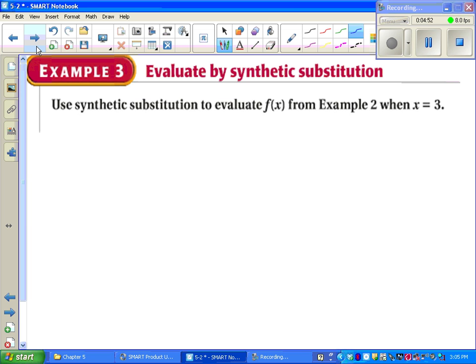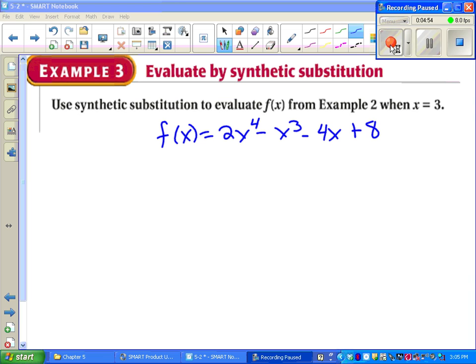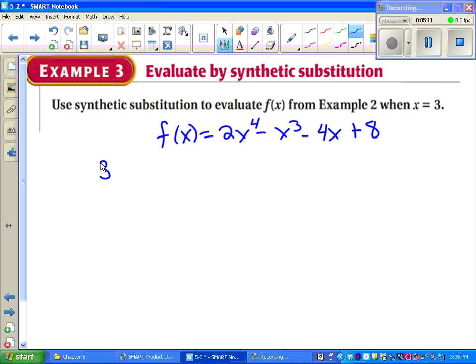So let's take a look at what synthetic substitution means. First, we look at the original problem from example two. Next, we have to check to see if this is written in standard form. It is. Again, that means highest degree down to lowest degree. And to use synthetic substitution, you also have to have a polynomial, which we do. Our next step is to write down the number we want to plug in. In this case, it's 3. Then we draw a big kind of upside-down division box.